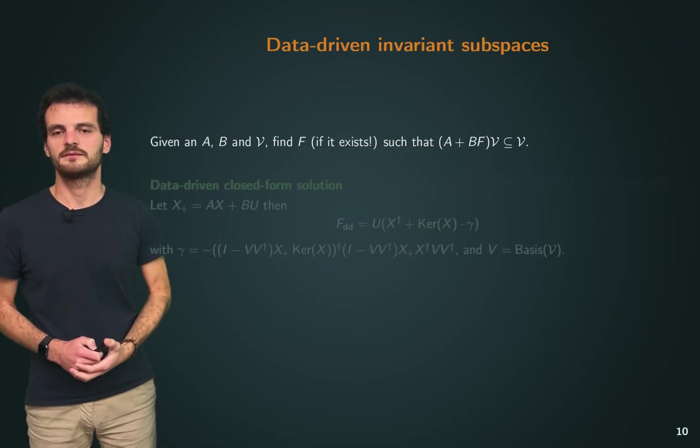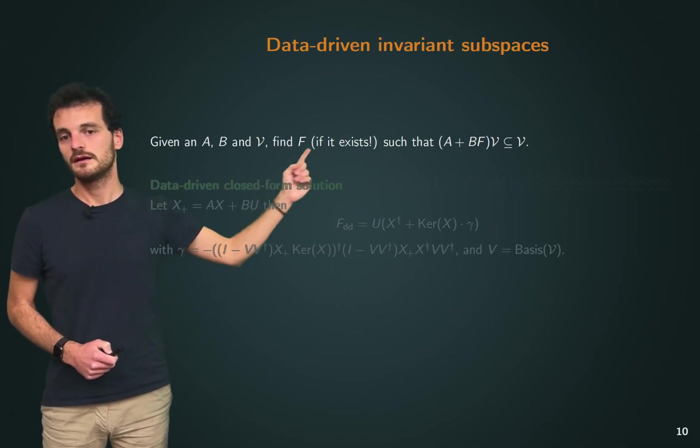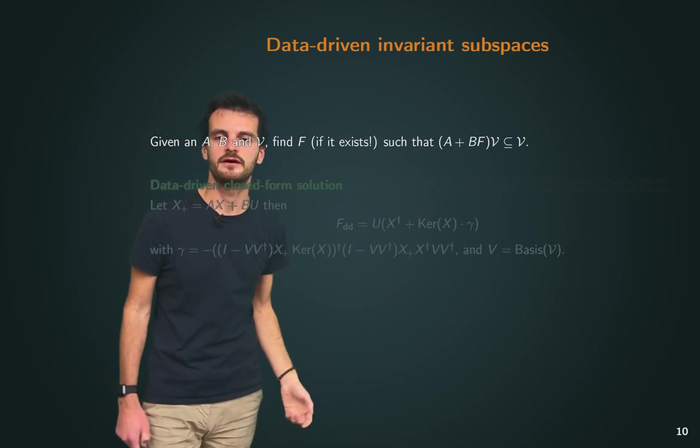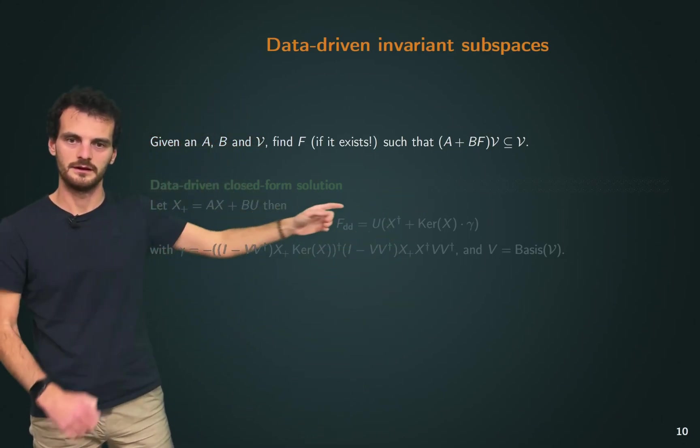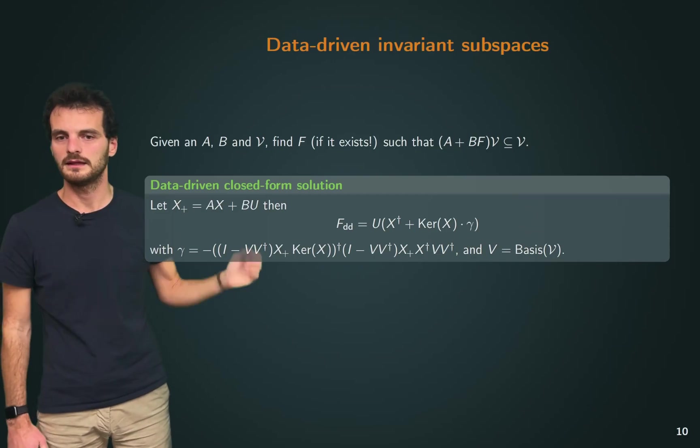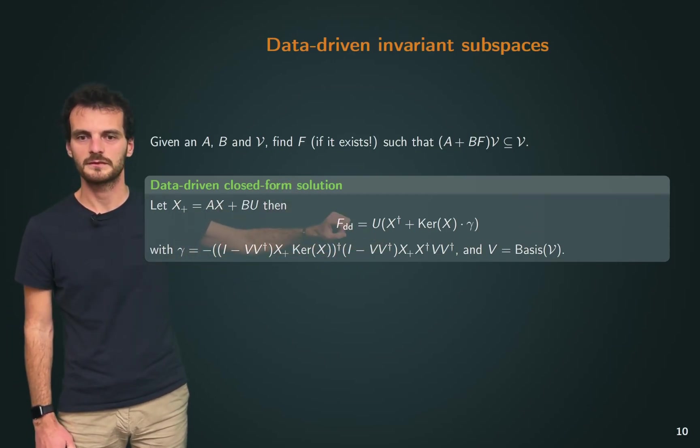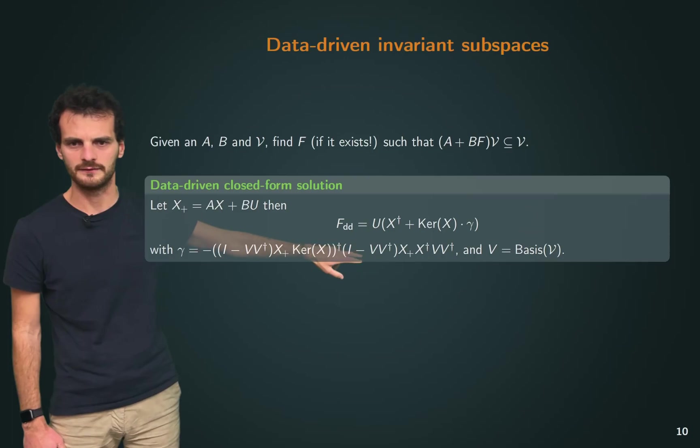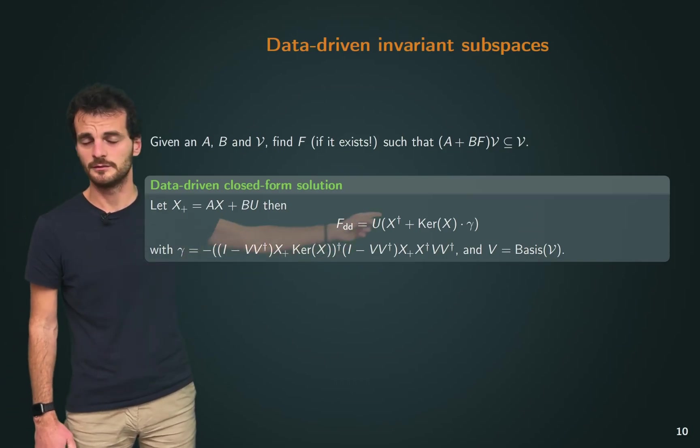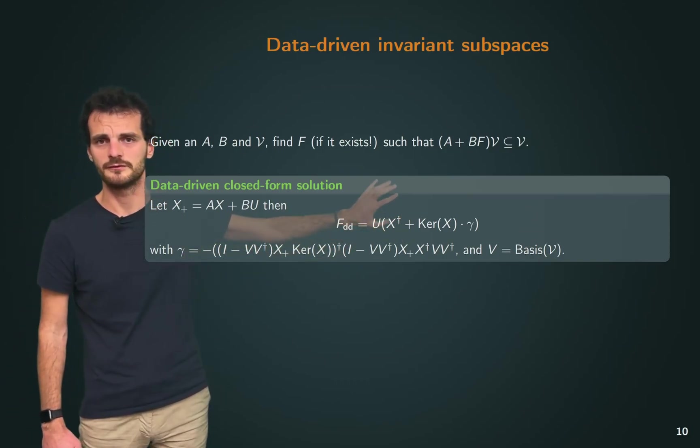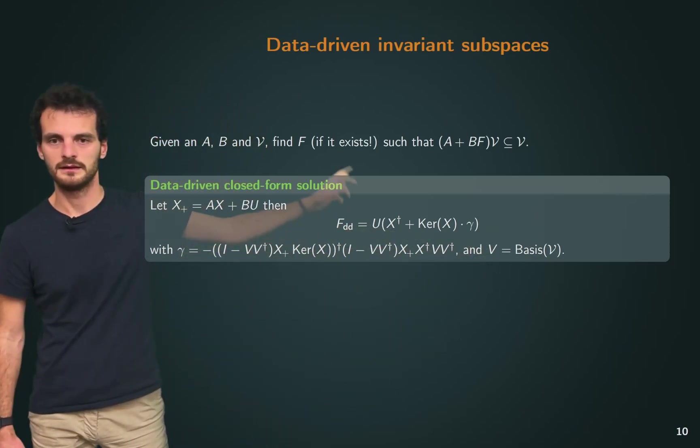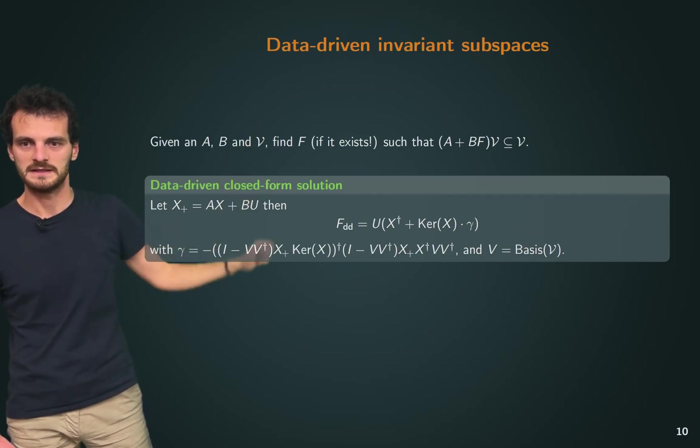Another result that we give in the paper, for example, is how can we find the feedback F such that if V is an (A,B)-controlled invariant, then A+BF is always such that V is invariant with respect to A+BF. So how do we find this F? Can we find it through data? The answer is yes. In the paper, we give a solution. This is a closed-form solution. It's a bit involved. You can see it's a bit long. This gamma is the result of an optimization problem that we solved and were able to solve in closed form. And V here is a basis for the controlled invariant subspace calligraphic V.